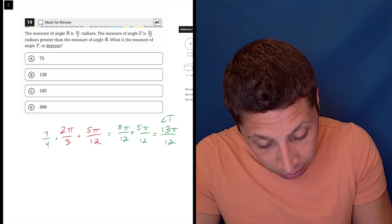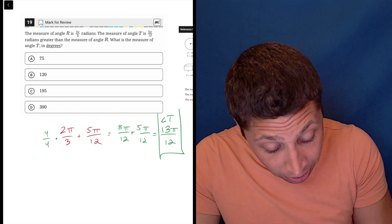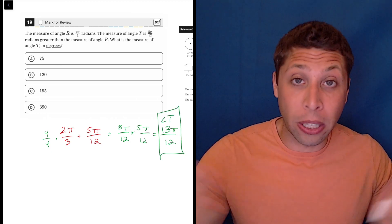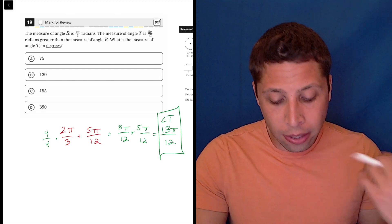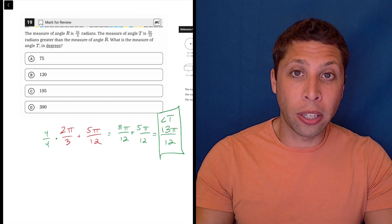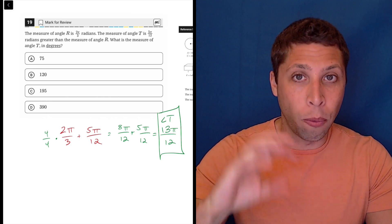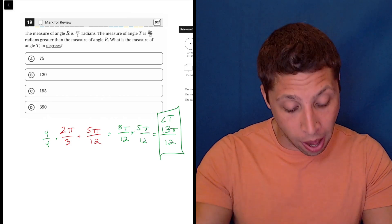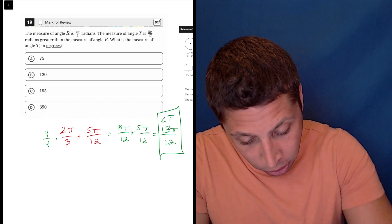So that is the measure of angle T. So that's kind of like my answer. Now, that's not an answer because they want us to convert that to degrees. Luckily, we know how to do that. For some of you, you might have learned the conversion that we just put a 180 in place of the π and then solve.